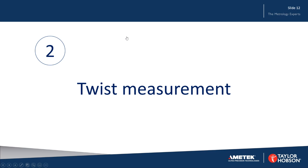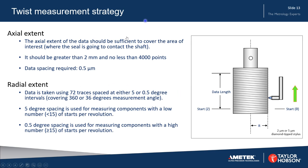So let's have a look at twist measurement. Before we measure twist, we need to think about the twist measurement strategy. Looking in the axial direction, the axial extent of the data needs to be sufficient to cover the area of interest — that's where the seal is going to contact the shaft. It should be greater than 2 millimeters, and the measurement should contain no less than 4000 data points. The data spacing required is half a micron. In the radial direction, data is taken in the axial direction using 72 traces.